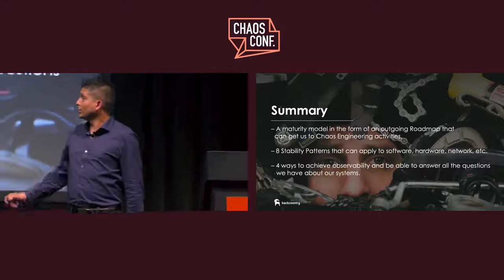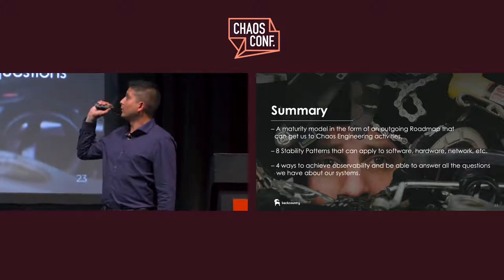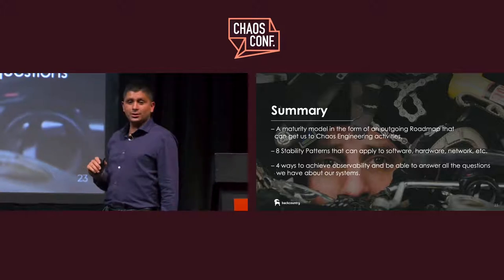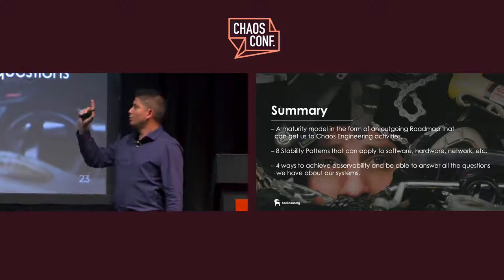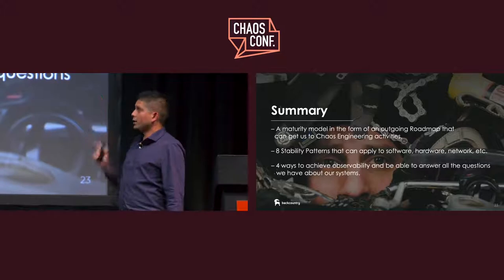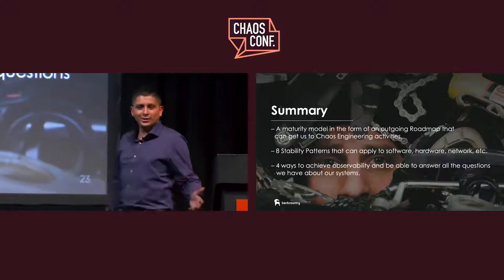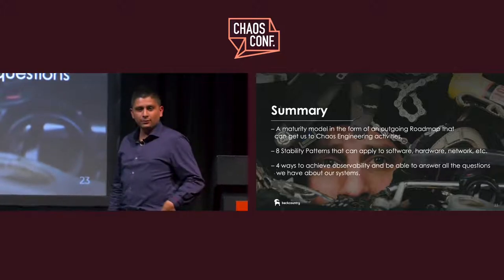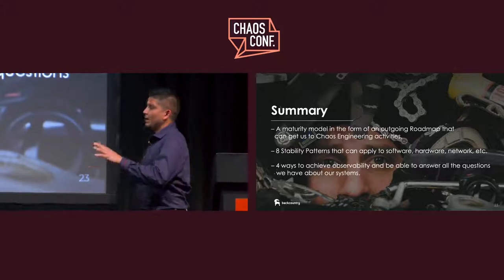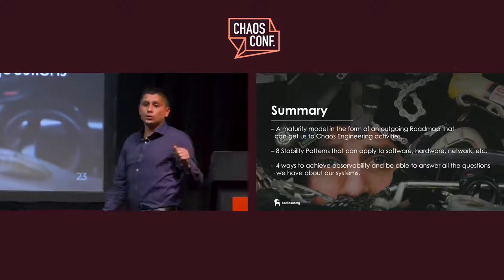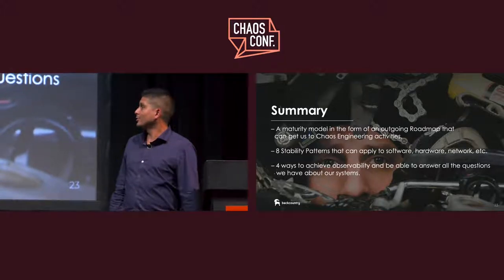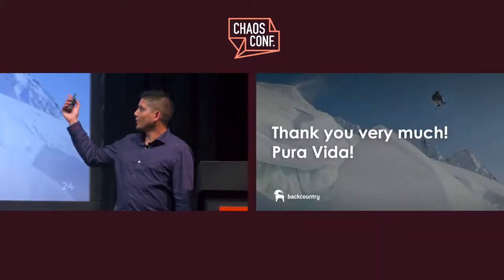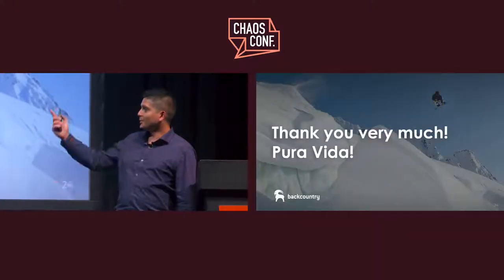In summary: we looked at a maturity model roadmap that can get us to chaos engineering; eight stability patterns that can be applied to software, hardware, and network — so when you run chaos engineering and find a problem, you have tools in your belt; and four ways to achieve observability to answer all the questions you have about your systems. Thank you very much — and as we say in Costa Rica, Pura Vida.